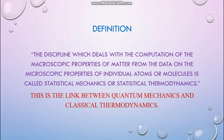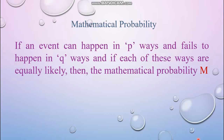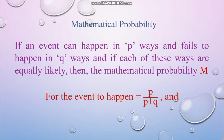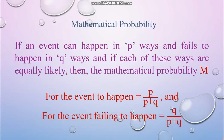Let's begin with the concept of probability, starting with mathematical probability. If an event can happen in p ways and fail to happen in q ways, and if each of these ways are equally likely, then the mathematical probability M should be p divided by (p plus q) for the event to happen, and q divided by (p plus q) for the event to fail.